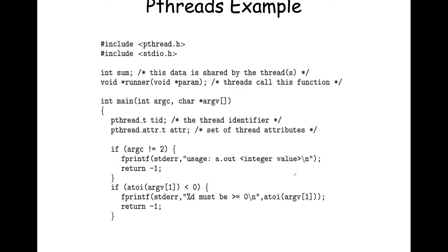Here is an example of the pthreads library. We include the requisite system headers - pthread.h and stdio.h - as preprocessor directives. This gives us definitions for the threading system calls and standard I/O. We create a global variable, int sum, which lives in the data section of your program. Then we have a function declaration with a return type, function name, parameter list, and semicolon - this is the function prototype, which tells your program the signature so you can use the symbol before it is defined.